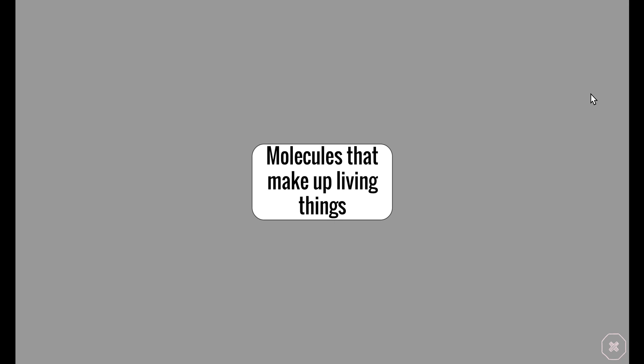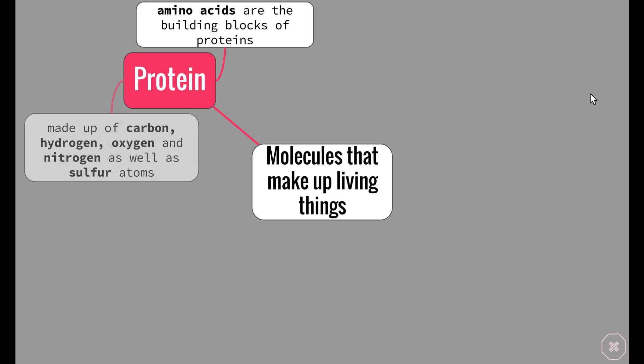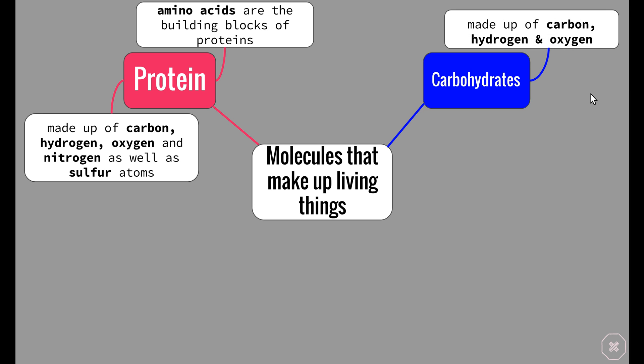So what are these organic molecules? We covered this briefly in the Patterns in Nature topic. Proteins are made up of amino acids as their building blocks, and consist of carbon, hydrogen, oxygen, and nitrogen, as well as some sulfur atoms. Carbohydrates — our sugars, such as glucose and sucrose — provide energy and are made up of carbon, hydrogen, and oxygen.